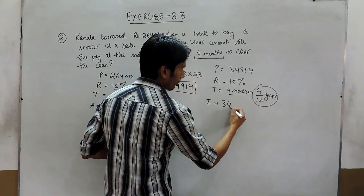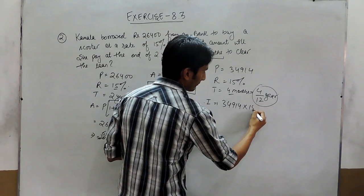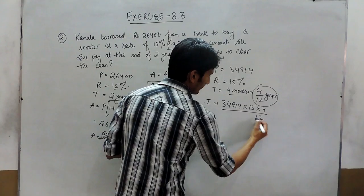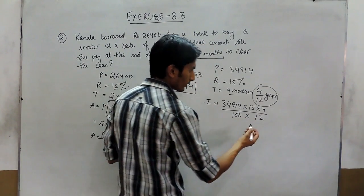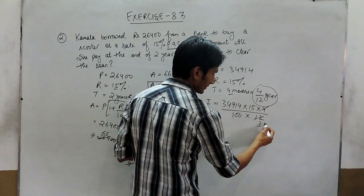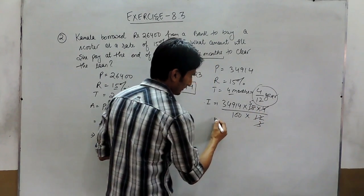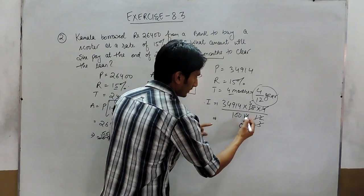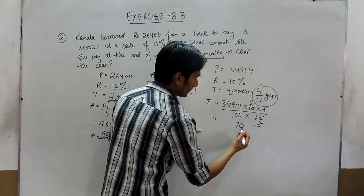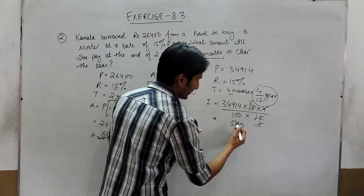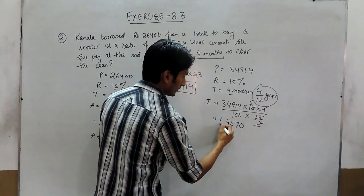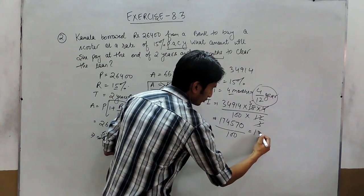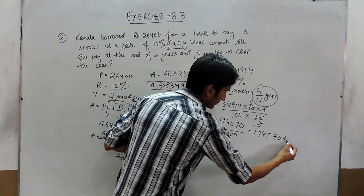The interest equals 34,914 multiplied by 15, multiplied by 4/12, divided by 100. Simplifying: 4 cancels 3 times, 3 cancels 5 times, multiplied by 4 and 5. This gives 7, 5, 4, 2, 70 upon 100, which equals 1,747.70.